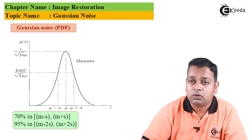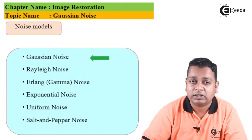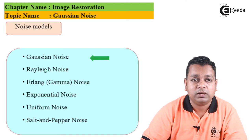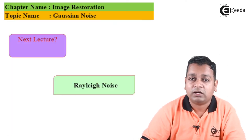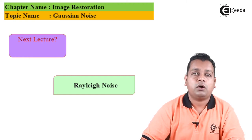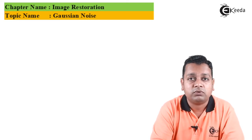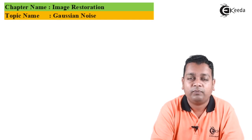In the noise models having six types listed—Gaussian noise, Rayleigh noise, Erlang noise, exponential noise, uniform noise, and salt-and-pepper noise—we have now covered Gaussian noise. In the next lecture, we shall discuss the next noise model, Rayleigh noise. I hope the topics of image restoration and digital image processing are benefiting you. For more information, subscribe to the Ikeda channel. Thank you.